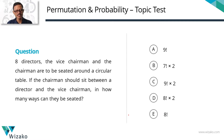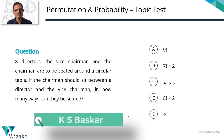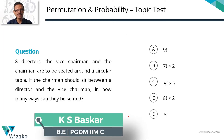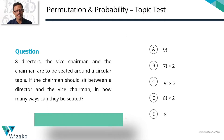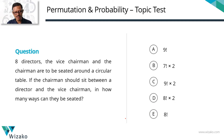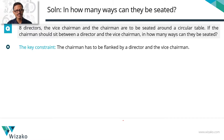This is a permutation and combination practice question dealing with circular permutation with constraints. Eight directors, the vice-chairman and the chairman are to be seated around a circular table. The constraint is that the chairman must sit between a director and the vice-chairman — that is, the chairman should be flanked by a director and a vice-chairman.